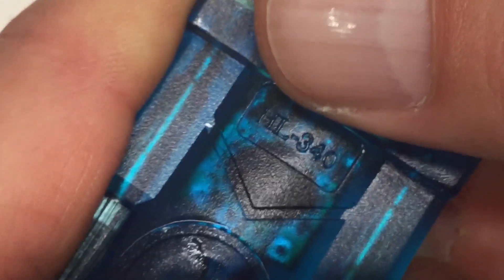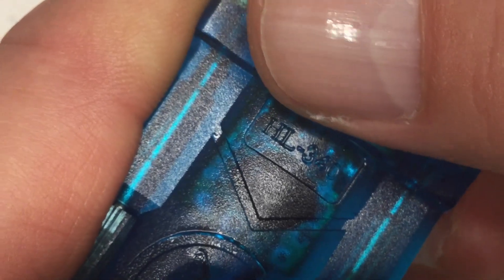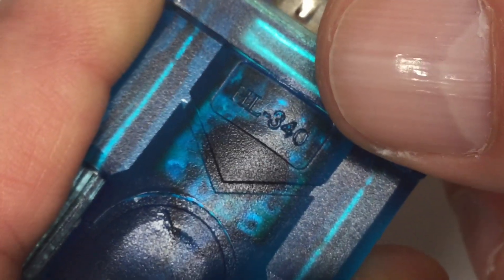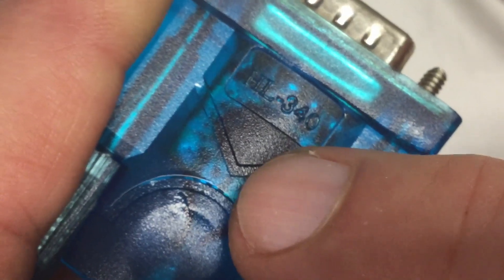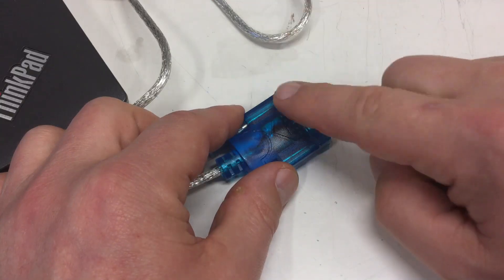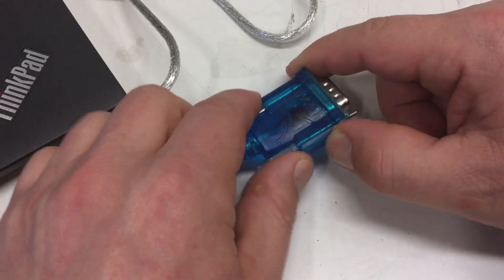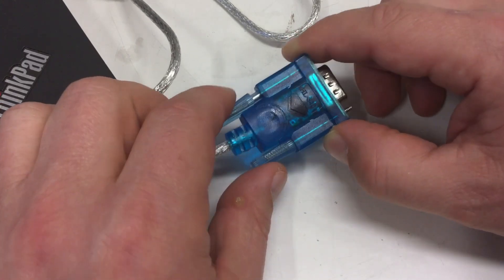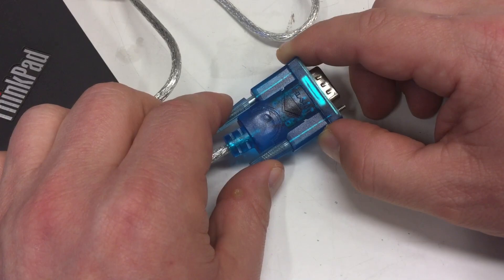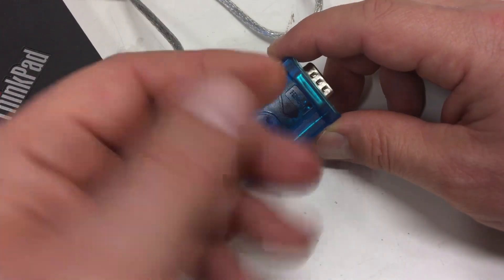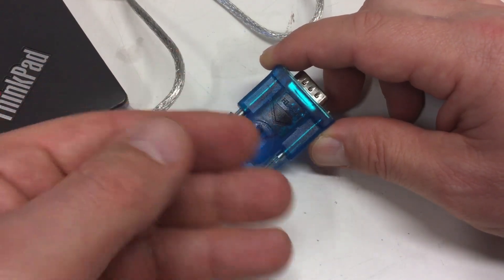I just noticed there's a type number embossed on the RS232 connector: HL-340. The chip inside is CH340, and all it does is convert USB to 5-volt serial—not to RS232, at least not RS232 according to specs.